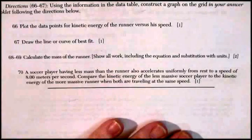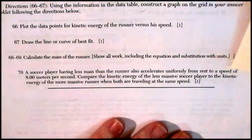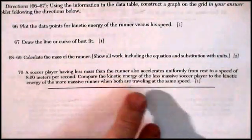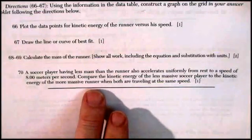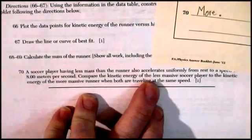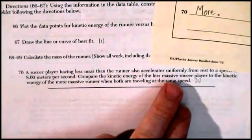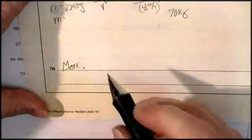Question 70. A soccer player having less mass than the runner also accelerates uniformly from rest to a speed of 8 meters per second. Compared to the kinetic energy of the less massive soccer player, the kinetic energy of the more massive runner when both are traveling the same speed. Compare the kinetic energy of the less massive soccer player to the kinetic energy of the more massive soccer player. I guess they probably want more than just one word.